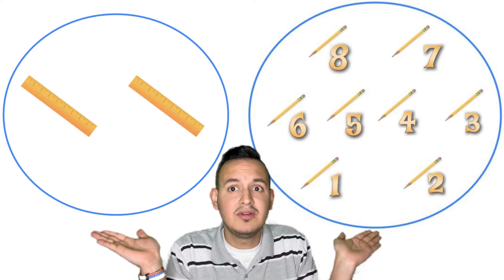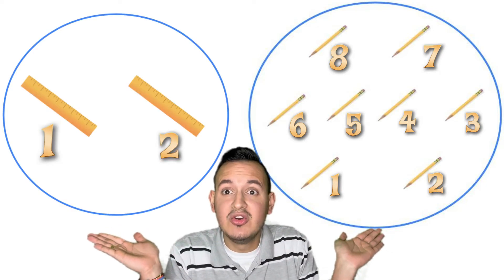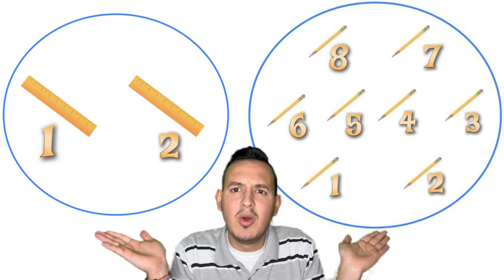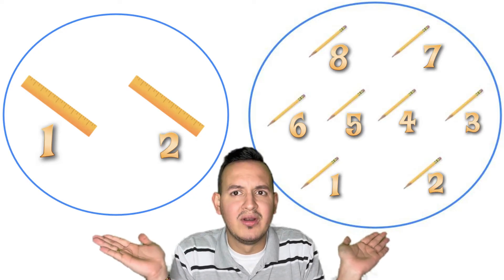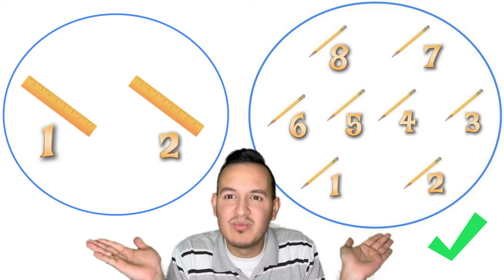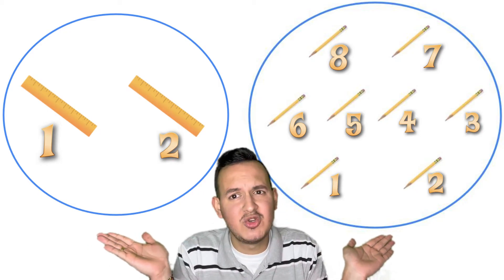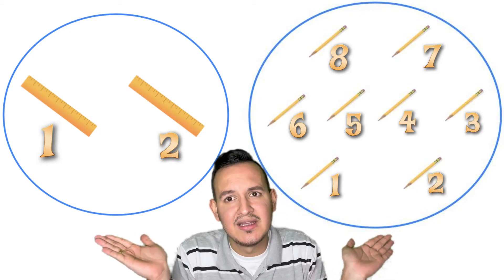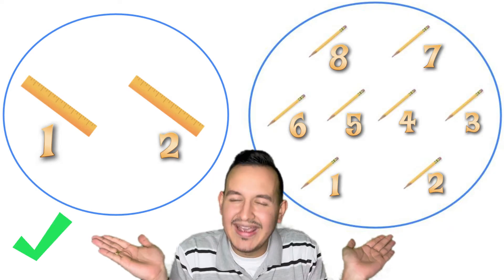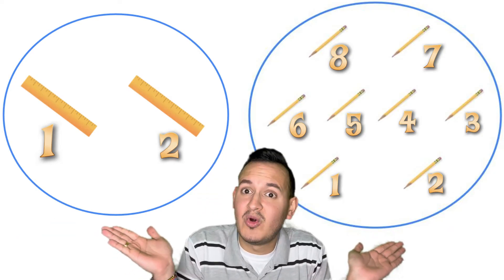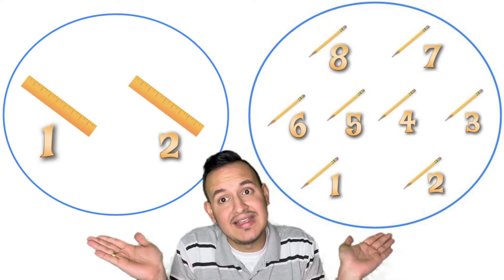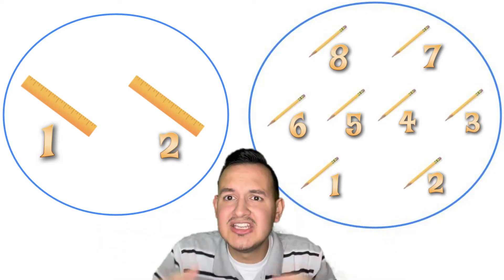And this is my second group. Count. Very good. Two rulers. Which group has more? Yes, more pencils. And which group has less? Yes, less rulers because eight is more than two and two is less than eight. Excellent job.